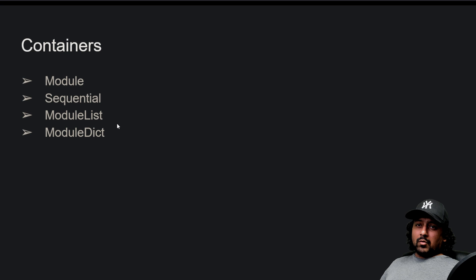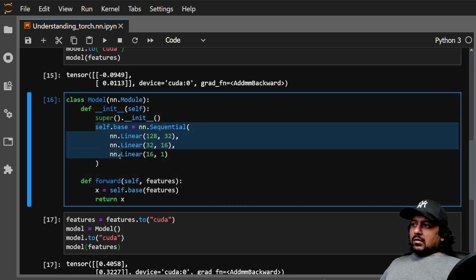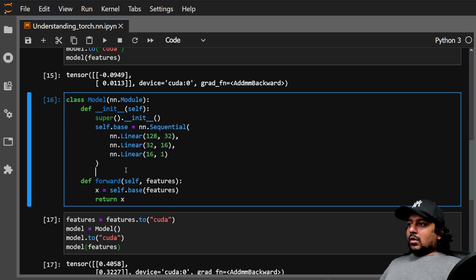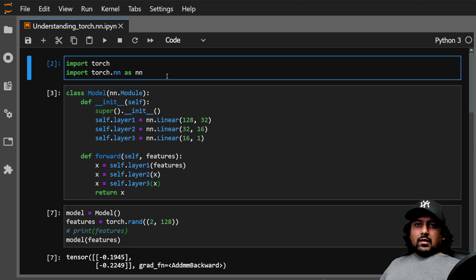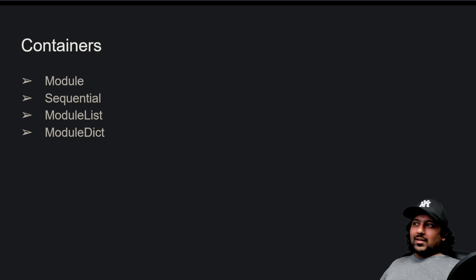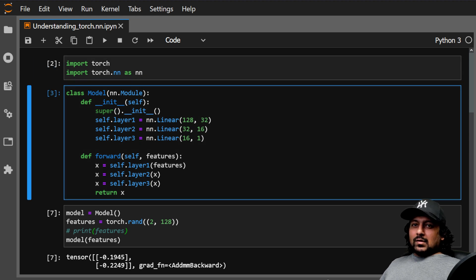Module and Sequential are important to know; ModuleList and ModuleDict are optional but useful. ModuleList holds modules in a list so you can index them, unlike Sequential which applies all layers automatically. ModuleDict keeps modules in a dictionary. This is a basic introduction to torch.nn — once you understand all this, it's easy to go from here to building a neural network to distinguish cat and dog images or anything else. If you have questions, write in the comments; if you liked this, please like and subscribe.